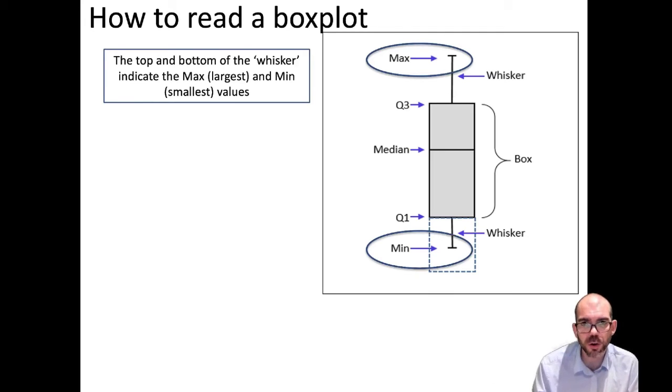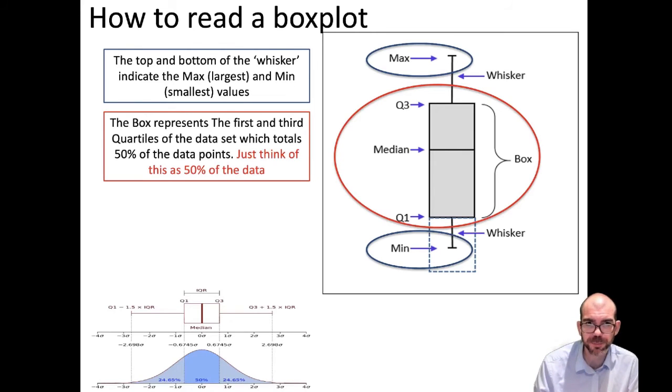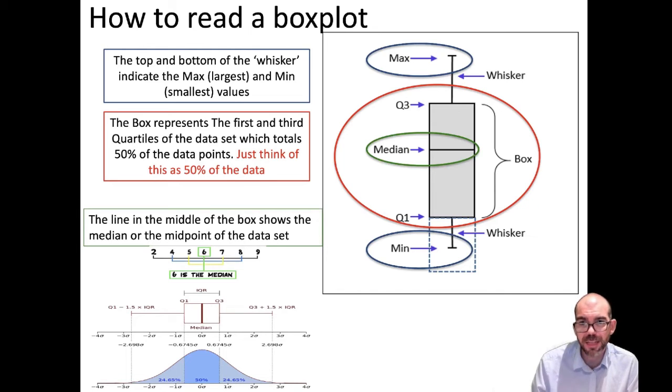So here's how you read a box plot. The top and the bottom, known as the whisker, represent the max, or the largest data point, and the min, or the smallest data point. The box itself contains the first and third quartiles of the data set, which totals 50% of the data points. For our purposes, just think of it as 50% of the data. The whiskers show me the largest and smallest value. The box has 50% of the overall value. That line in the middle is showing us the median, or the middle point of a data set. If I were to list all of the numbers from smallest to largest, that line in the middle is the point right at the middle of those points. And it makes sense to read it that way on a box and whisker, because we have the max and min represented by each whisker.